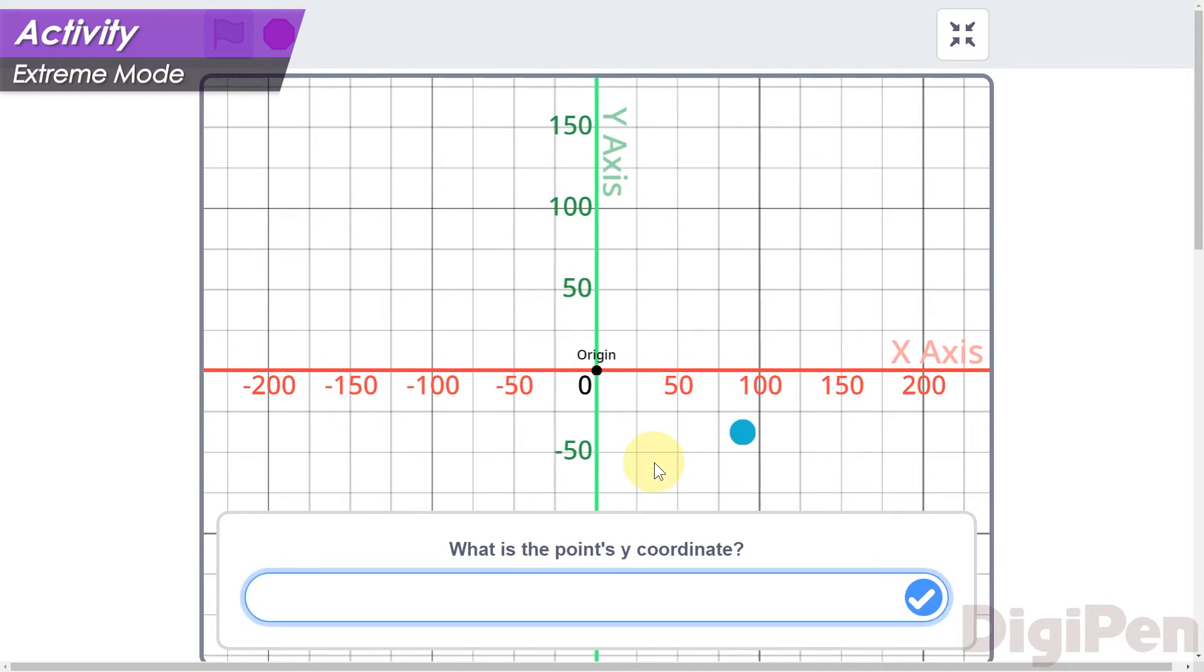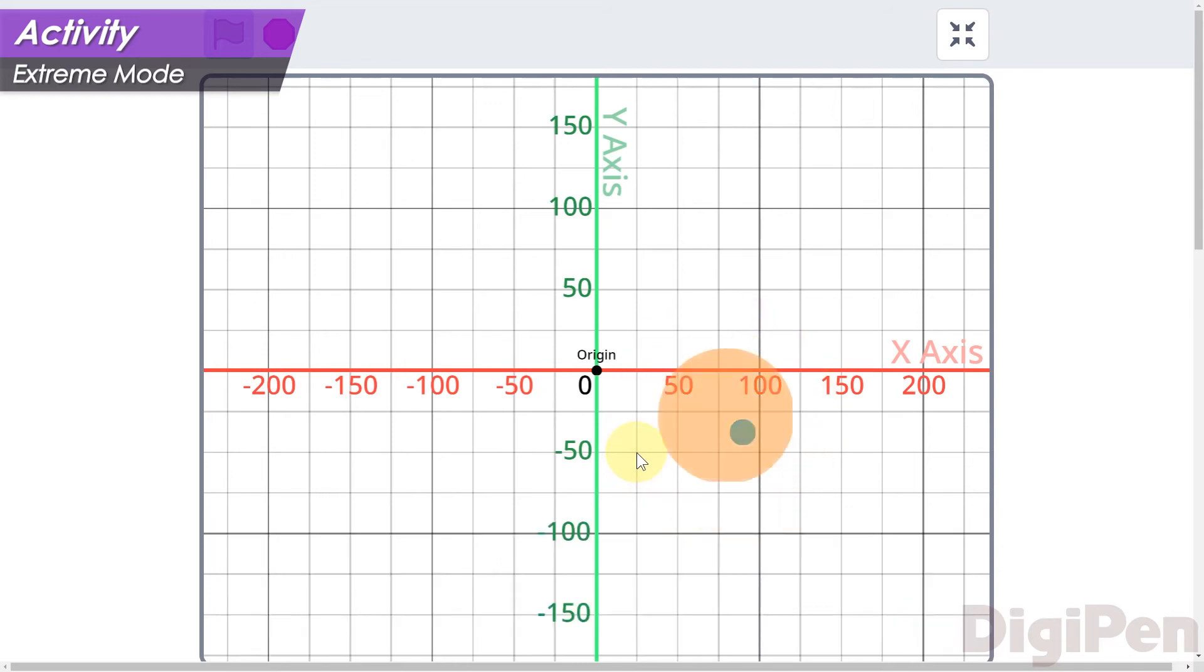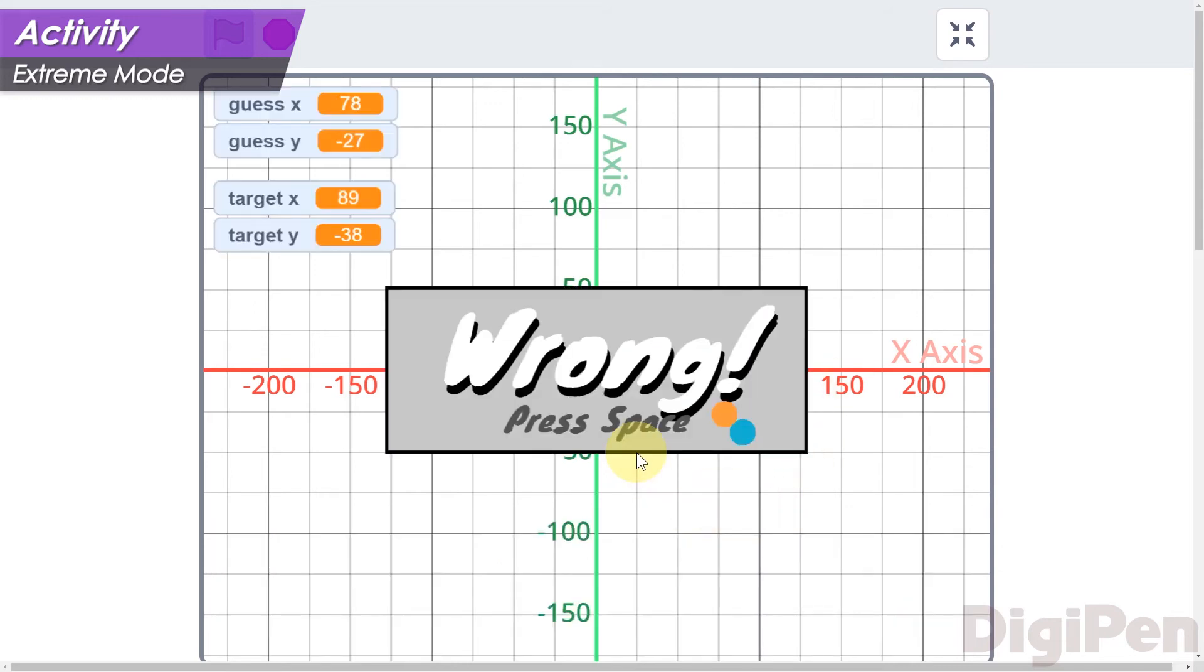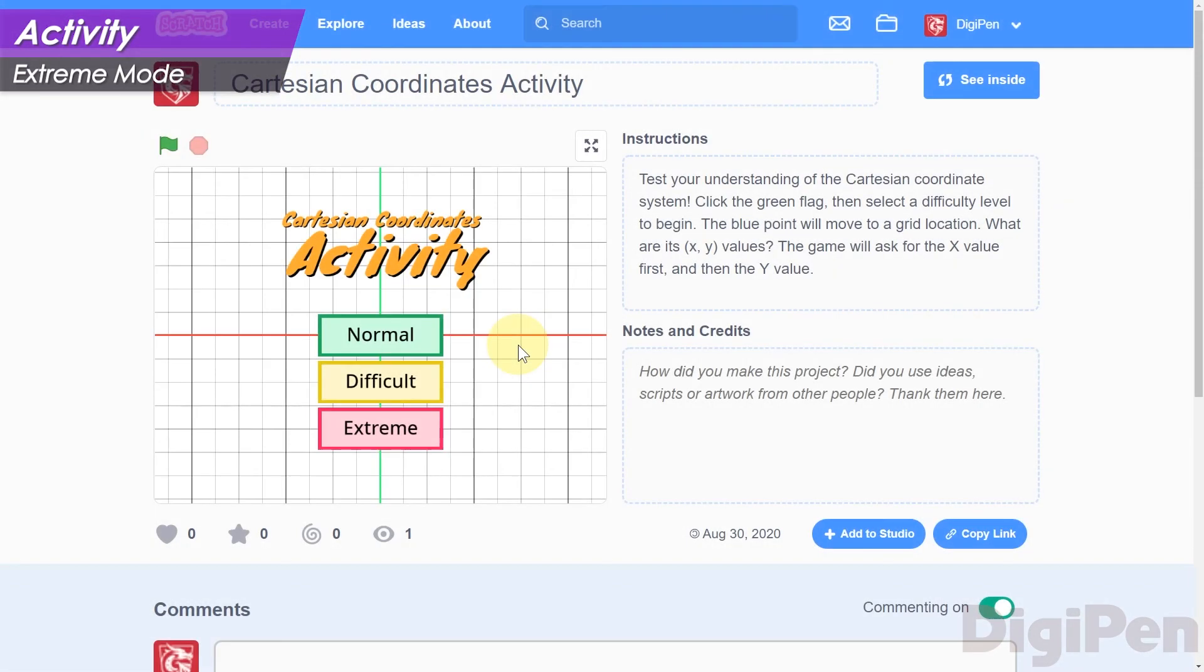And vertically, it looks like it's between negative 25 and negative 50 units along the y-axis. Let's guess negative 27. Whoops, that wasn't right. Well, we don't call this difficulty extreme for nothing.